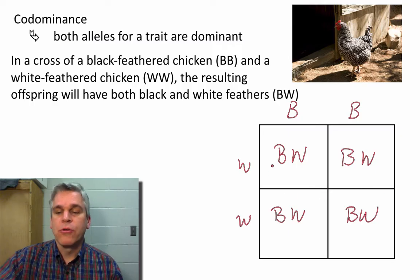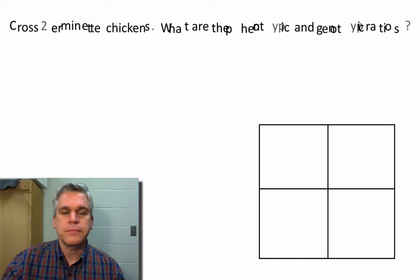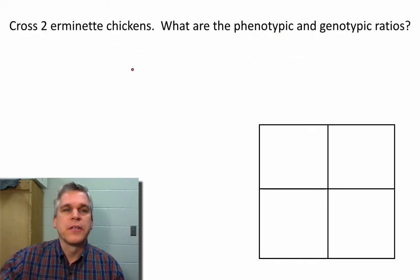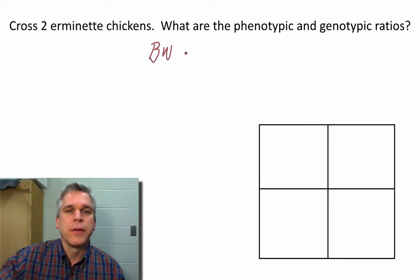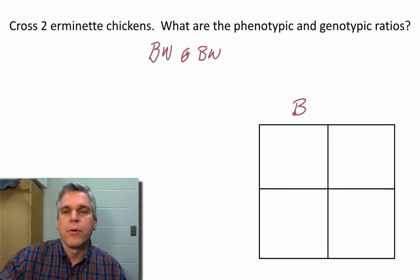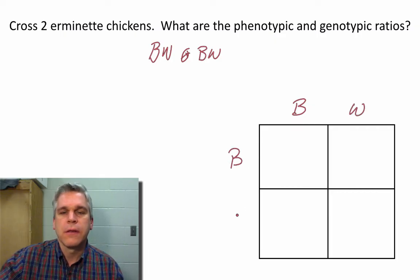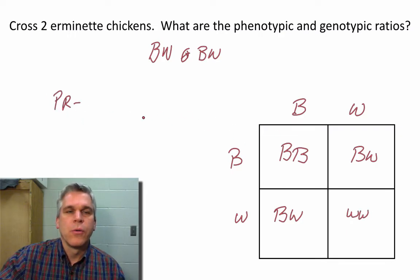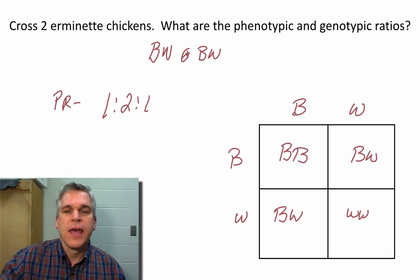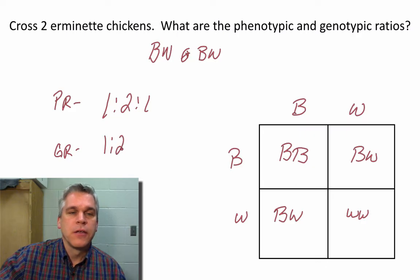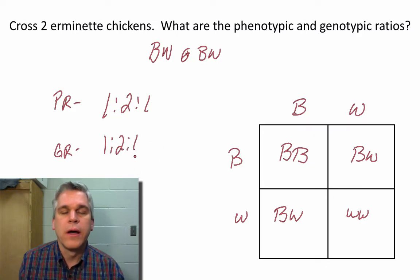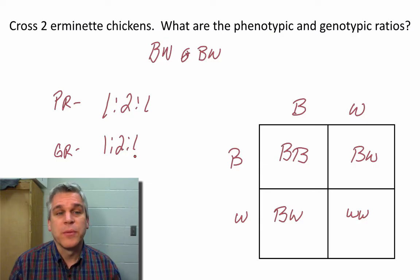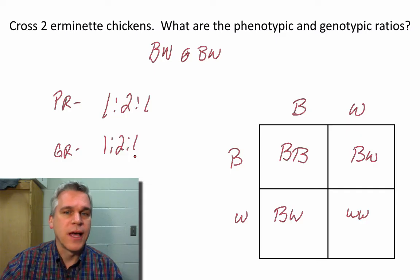Now let's cross those two erminette chickens. It's asking for the phenotypic and genotypic ratio. The two erminette chickens would both be BW crossed with BW — both the black and the white feathers. For the phenotypic ratio, we have one black-feathered chicken, two erminette (black and white feathered) chickens, and one white chicken. The genotypic ratio: we get one BB, two BW, one WW. So the phenotypic ratio and the genotypic ratio would be the same in a codominant trait.